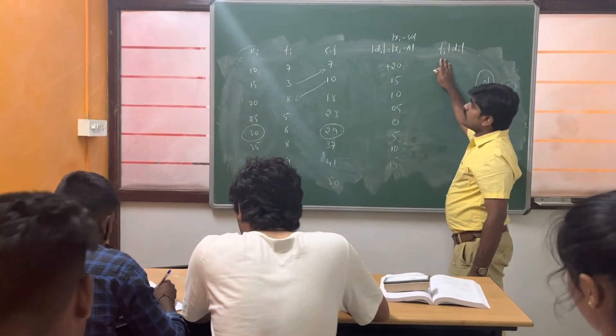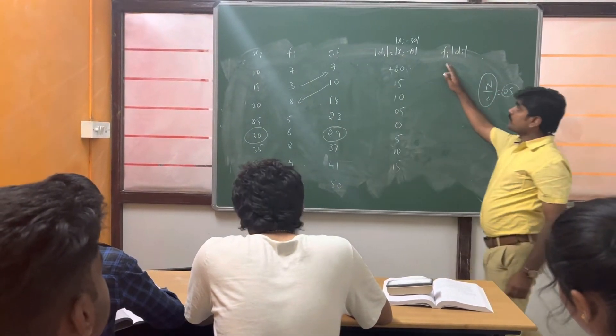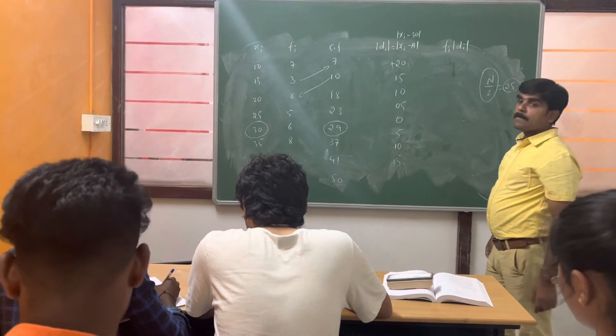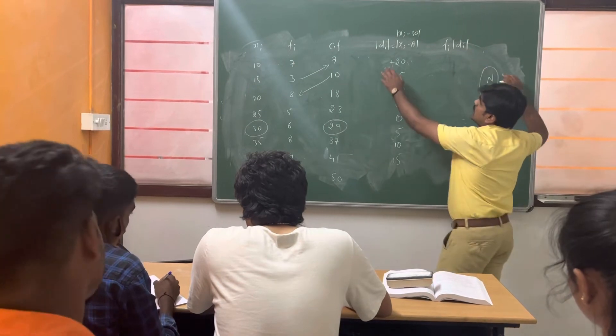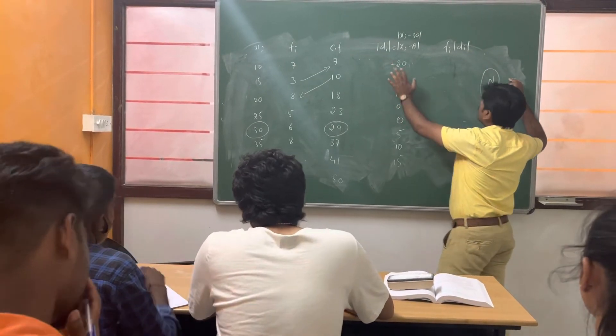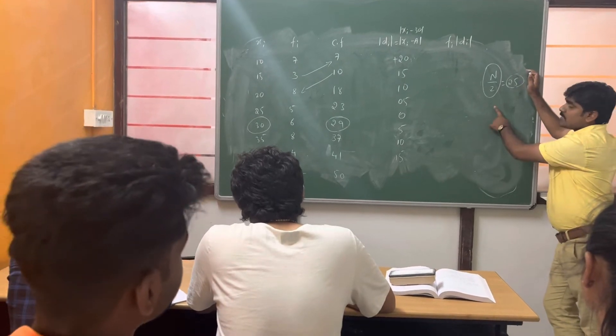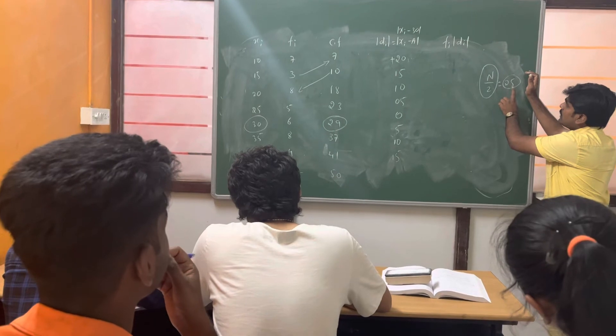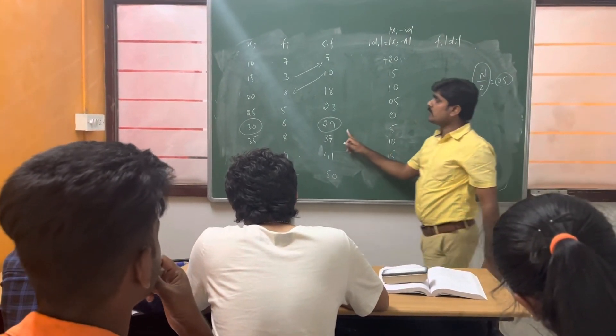Then you can find out the fi into di. Just you have to multiply this. There is no formula. See, this is the summation of frequency. Once you find out the summation of the frequency by 2, we are getting 25. Based on this, we need to find out the median.